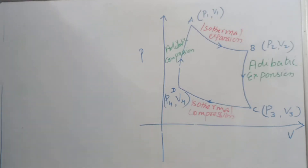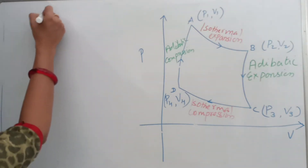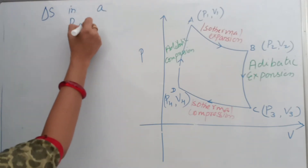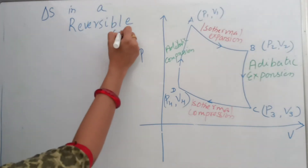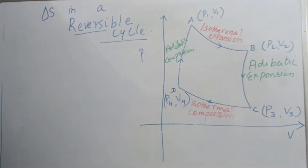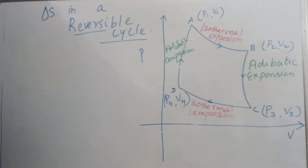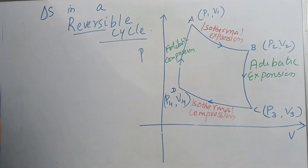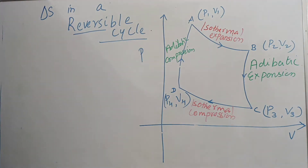In this video, we are going to discuss the change in entropy in a reversible cycle. What do we mean by a reversible cycle? In each of the intermediate states, the direction of the process can be reversed, and the system will be at equilibrium for most of the time. That is what we call a reversible cycle.